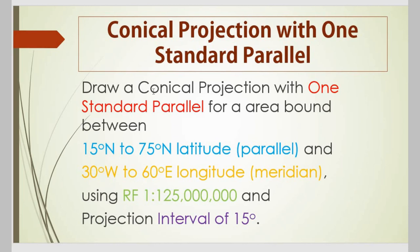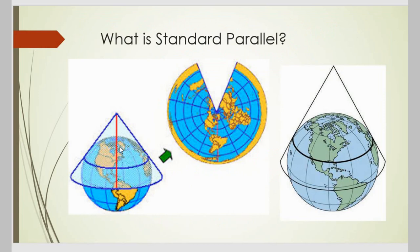And now, what is conical projection? Conical projection is done when the map or paper surface is kept around the globe just like a cone. As you can see, the paper is folded as a cone, and because of this cone shape, this projection is named a conical projection.